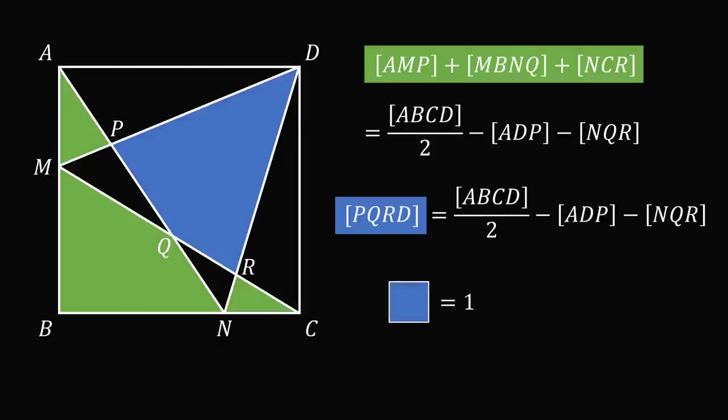Thus, if the blue region is equal to 1, the total of the green areas is also equal to 1. And that's the answer.